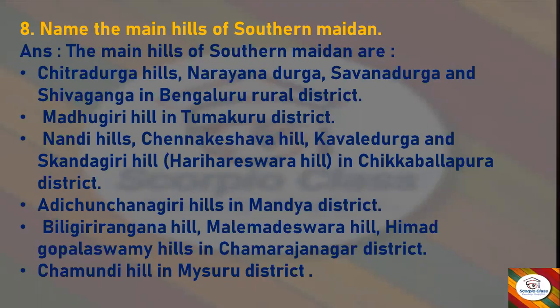Next: Name the main hills of the Southern Maidan. Answer: The main hills of the Southern Maidan are Chitradurga Hills, Narayanadurga, Savanadurga, and Shivaganga in Bengaluru Rural District; Madhugiri Hill in Tumkuru District; Nandi Hills, Chennakeshava Hill, Kavale Durga, and Skandagiri Hill (also known as Hari Hareshwara Hill) in Chikkaballapur District; Adi Chunchanagiri Hills in Mandya District; Biligiri Rangana Hill, Malamadeshwara Hill, and Himat Gopal Swami Hills in Chamarajanagar District; and Chamundi Hill in Mysore District.